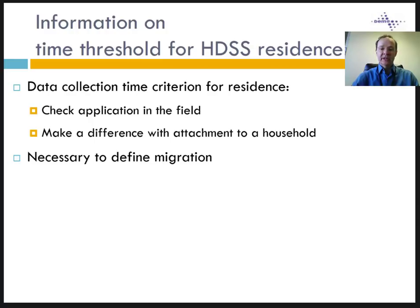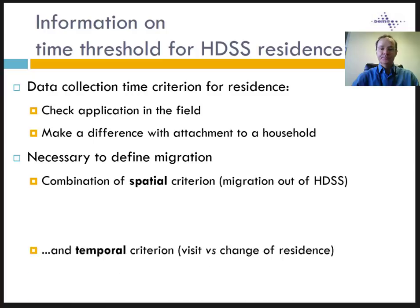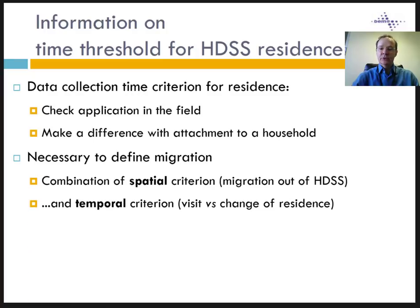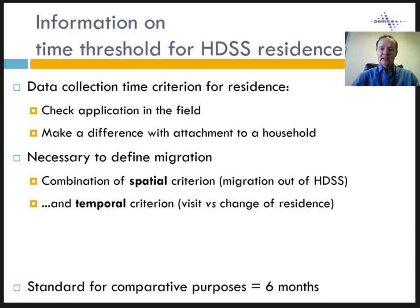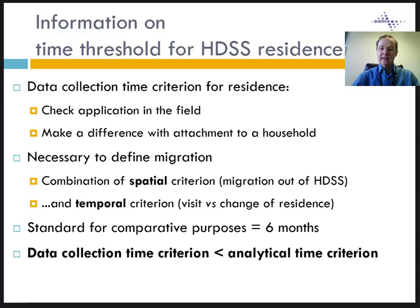Migration is therefore a combination of spatial and time criteria. The spatial criterion defines the study area limits, which are partly arbitrary. In principle, the borders of an HDSS delimit a homogeneous space from the social and economic point of view. The temporal criterion is the time threshold used to define a residence — it puts a limit between visits and periods of residence, and is also arbitrary. In HDSS, the time limit varies between 3 and 6 months. In migration analysis, the time limit is usually 6 months. One guiding principle is that the time criterion taken in the field for data collection should always be less than or at worst equal to the time criterion used for analysis.